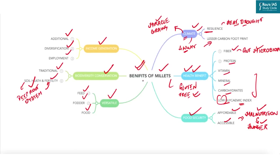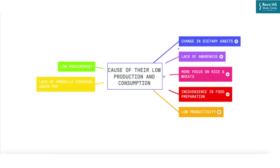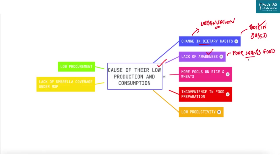Millets are highly nutritious and can withstand adverse climatic conditions. In India, millets have been a traditional staple crop for centuries, but their production and consumption have decreased significantly. The first reason behind their low production and consumption is a change in dietary habits: with rising urbanization, there has been a shift towards a more westernized diet and a decline in consumption of traditional foods like millets, along with a shift towards more protein-based foods like pulses, milk, eggs, and fish. Another challenge is lack of awareness — millets are often seen as a poor man's food, and urban populations are unaware of their nutritional value.